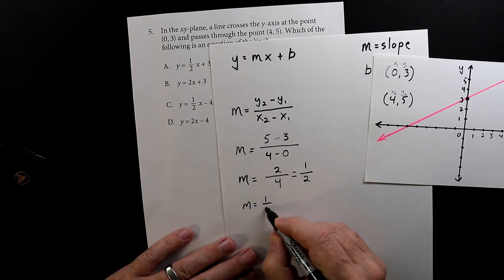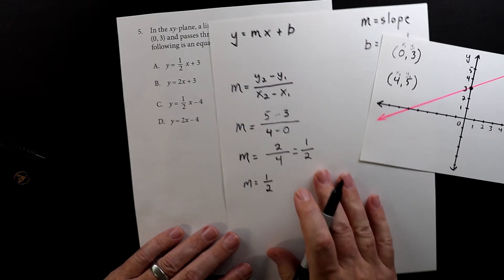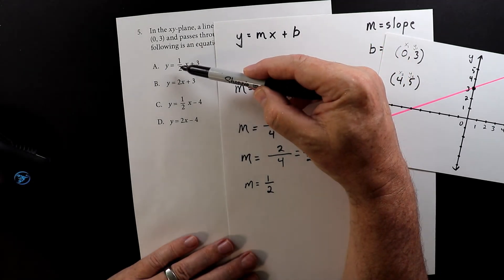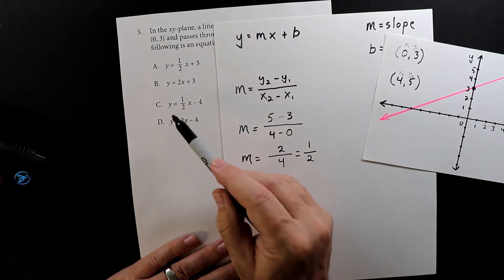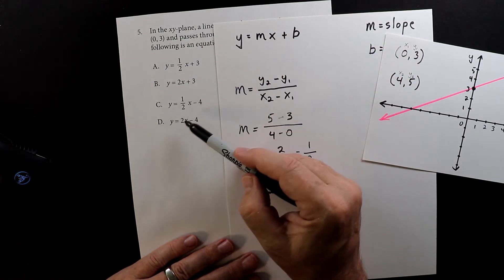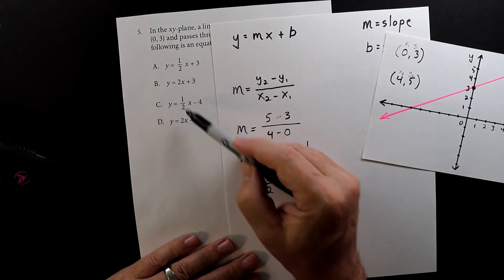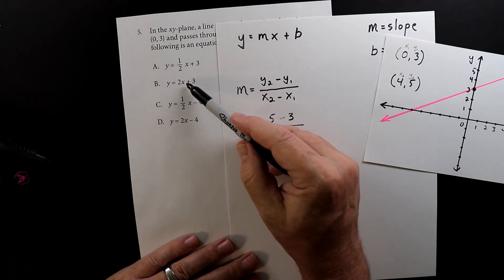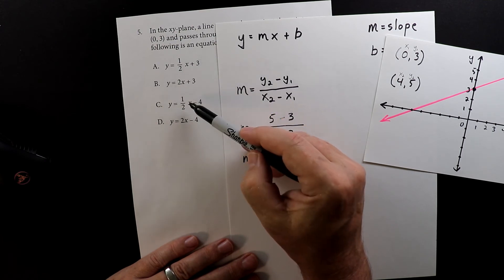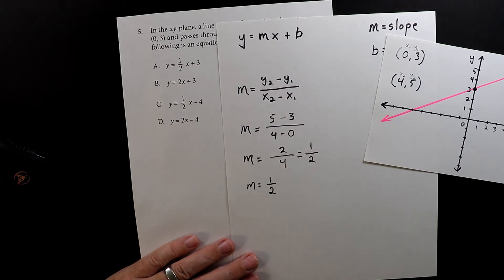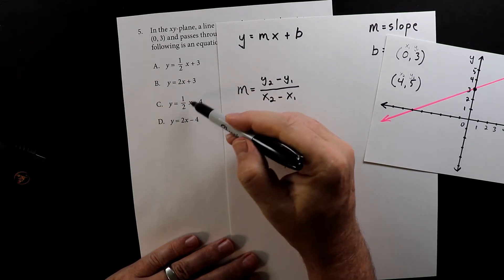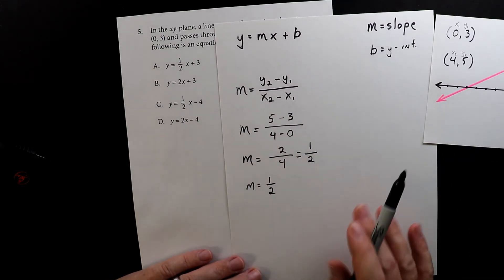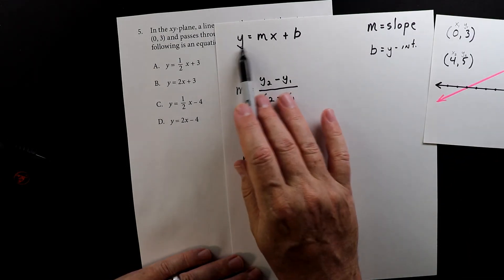Right away we can see from the answer choices that it could be this one or this one. m is not equal to 2, so those two options are out — we can just ignore them. That leaves us with two possibilities.